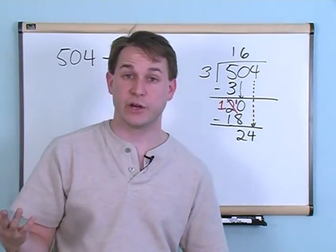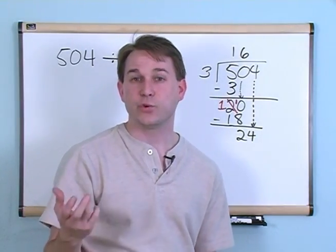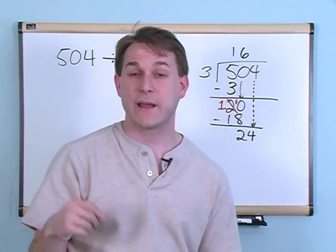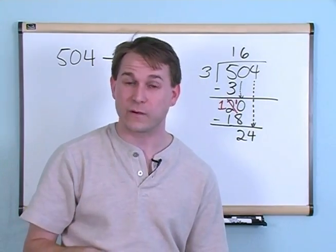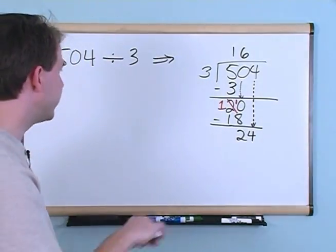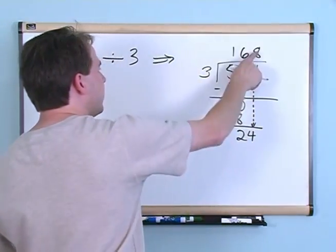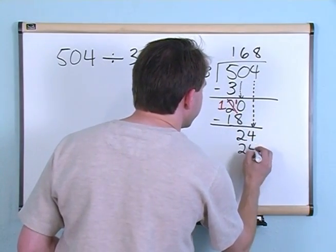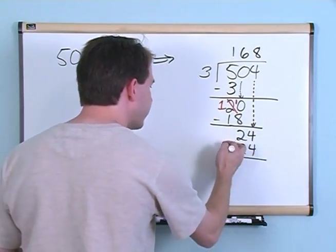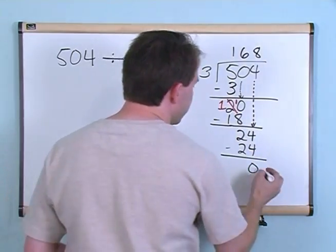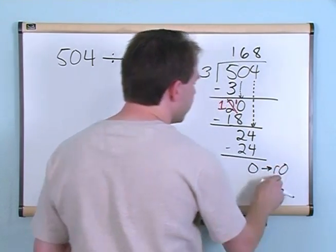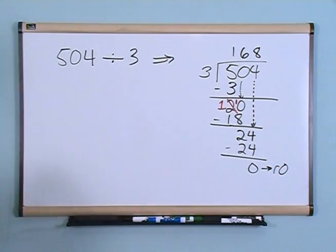How many times will it go? Well, if you think about it, you'll realize that 8 times 3 is 24. So it goes an even number of times and that would be 8 times. 8 times 3 is 24. 24 minus 24 gives you big fat 0. So the remainder is 0. There is no remainder in this problem.